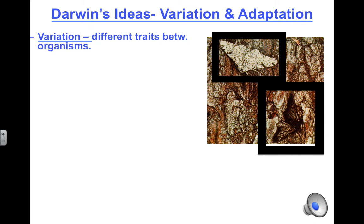Which moth will have a higher chance of surviving? The darker colored moth has a higher chance of survival. Its darker color can help it to blend in with the dark colored tree, while the light colored moth is easily seen by its predators and would probably be eaten first. The dark color of the moth is its adaptation — a trait that helps it to survive. Since the organism is able to survive, it can reproduce more and pass on this adaptation to its offspring.